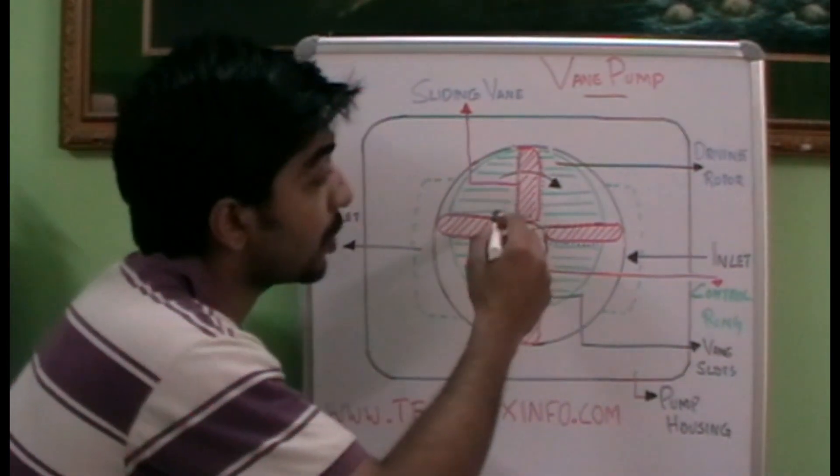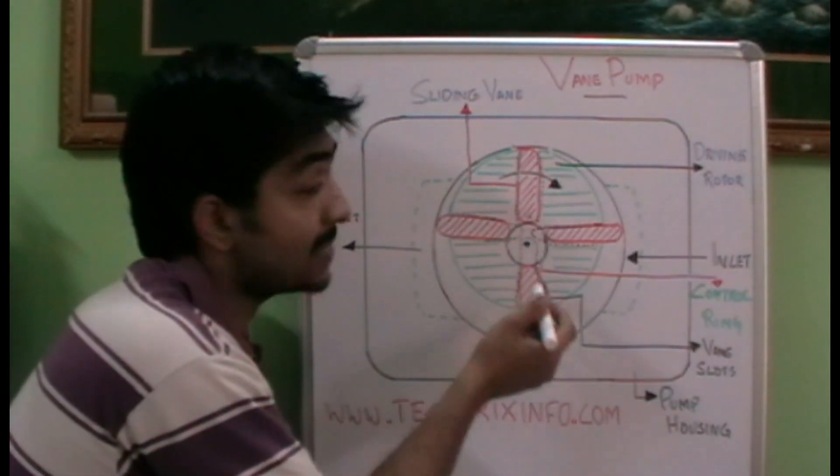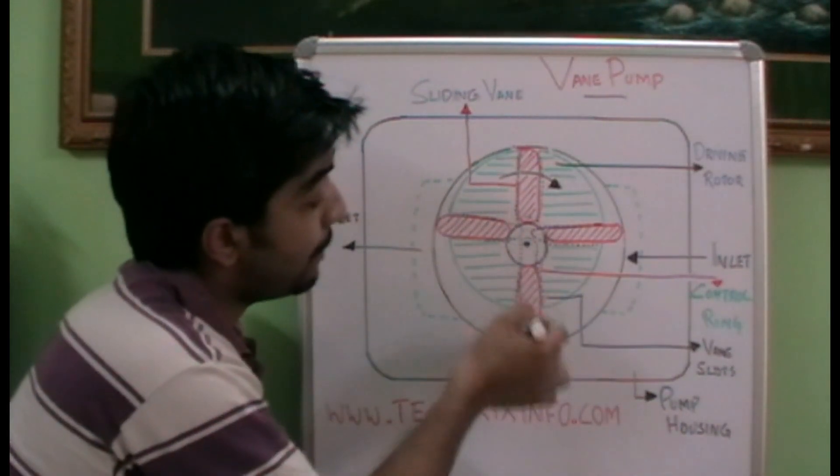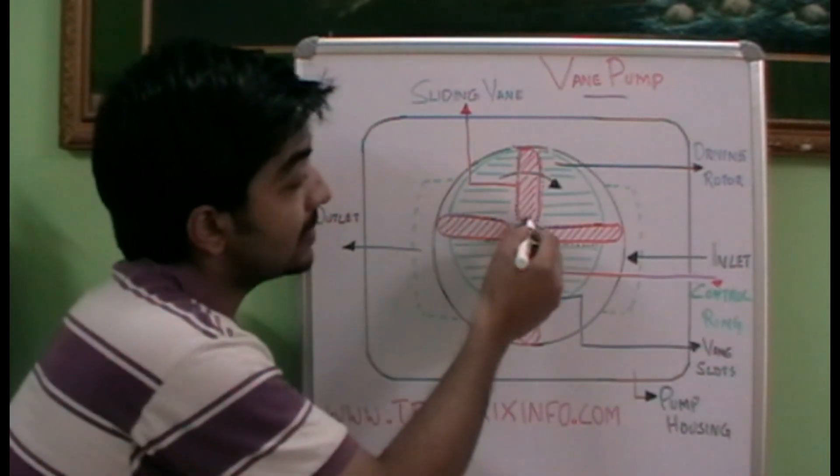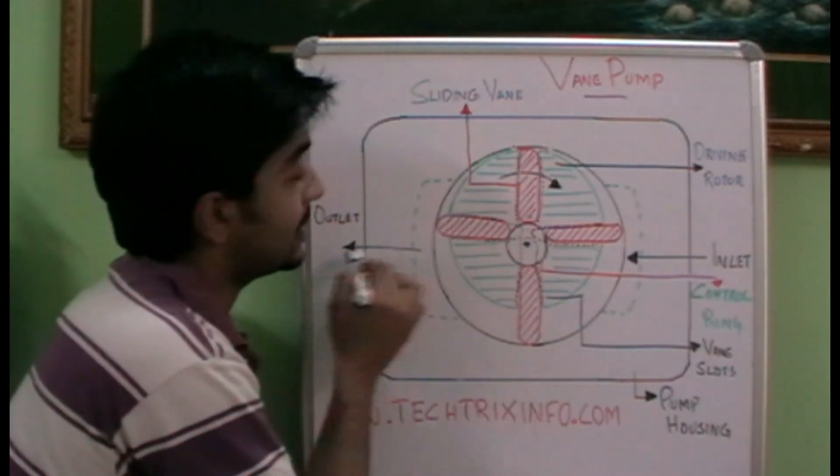As the driving rotor rotates, as it is eccentrically placed towards the pump housing, we can see that the distance of these vanes from the center of the driving rotor is different in each position. Here you can see this is the inlet and this is the outlet.